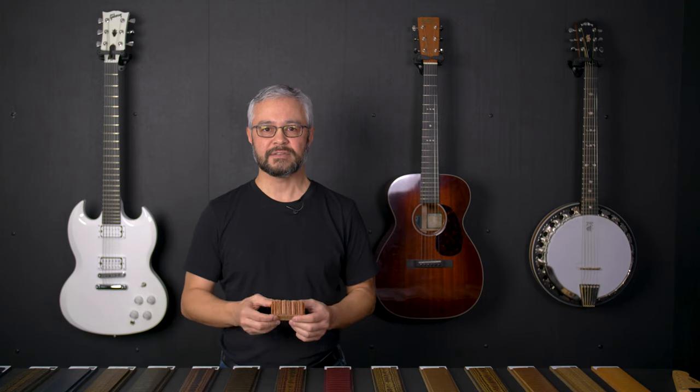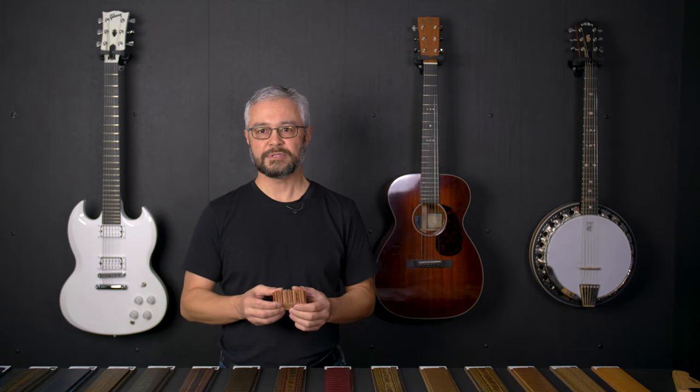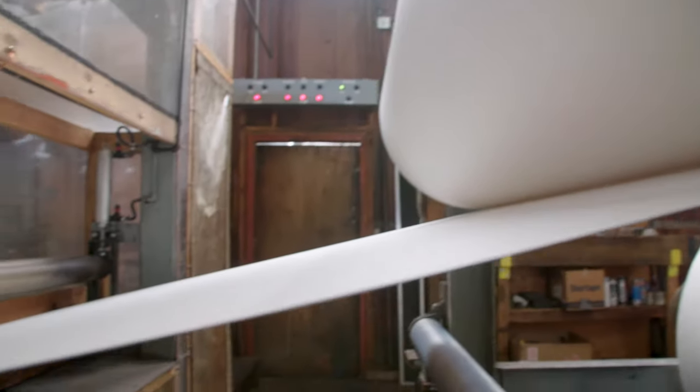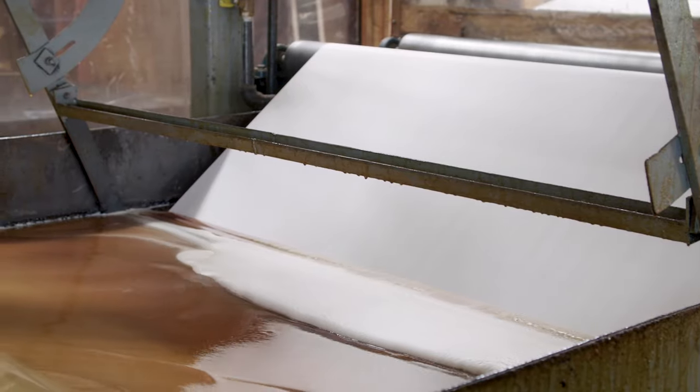One of the questions we often get asked is, why would I use Richlight when it's just recycled paper? The reality is that Richlight is made out of 200 sheets per inch.